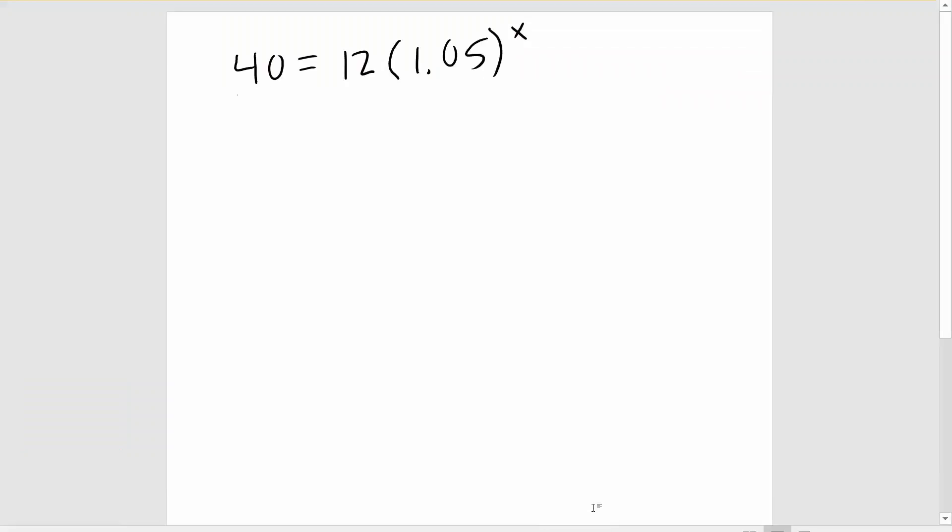Remember that our first step to solve an exponential equation is to isolate the exponential part, that is the 1.05 to the power of x. So the first thing we need to do here is to divide both sides by 12. On the left, this will leave us with about 3.33. On the right, 1.05 to the power of x.